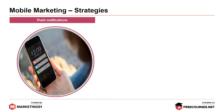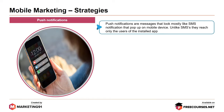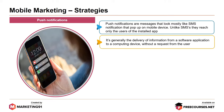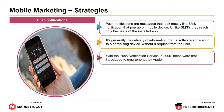Push notifications are messages that look mostly like SMS notifications that pop up on a mobile device. Unlike SMSs, they reach only the users of the installed app. It's generally the delivery of information from a software application to a computing device without a request from the user. With the push notification service, these were first introduced to smartphones by Apple in 2009.